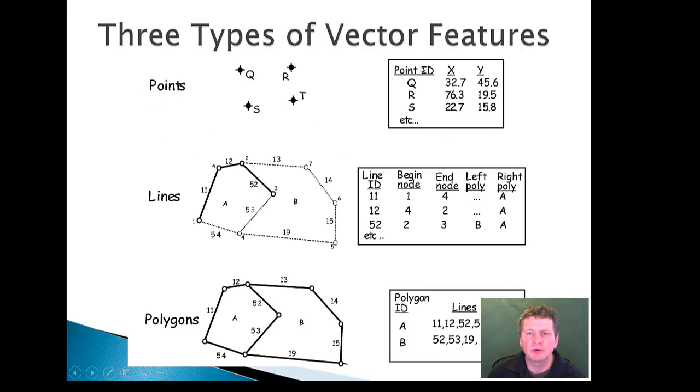And again, a little bit more detail in terms of what's necessary to define these. So we have lines that have nodes. The points become nodes here. And then polygons would be a collection of lines.